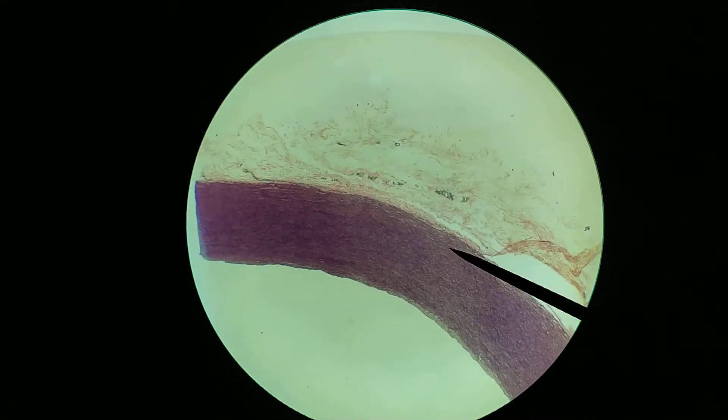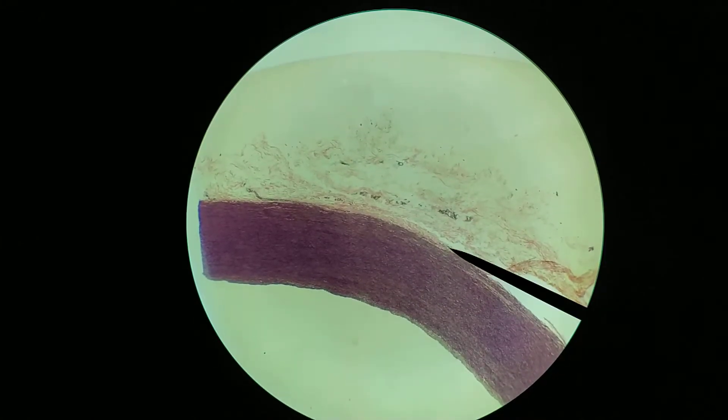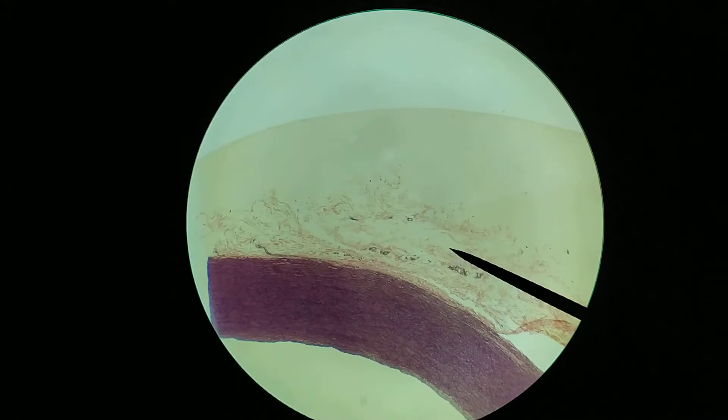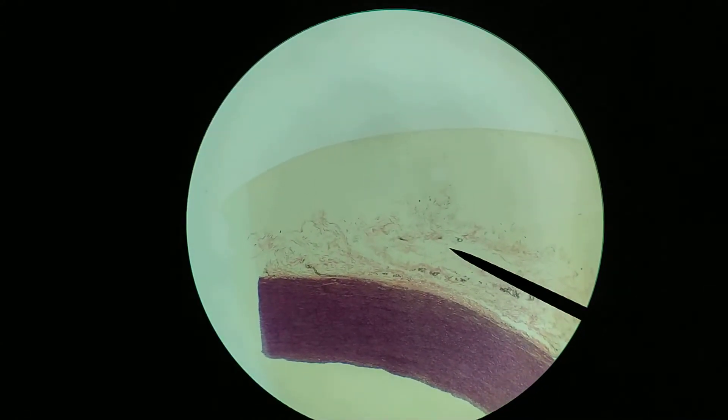Now beyond this, we have the tunica adventitia, which is visible right here, for example. As we go further out, we can see a bit more damage to this tissue. And so it's a little bit atypical in this area here.